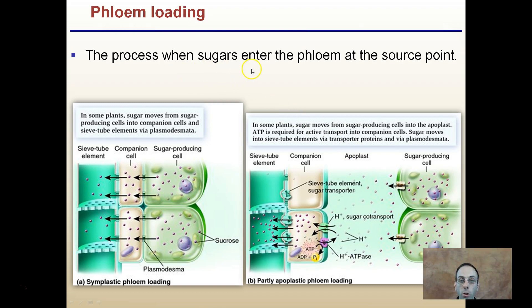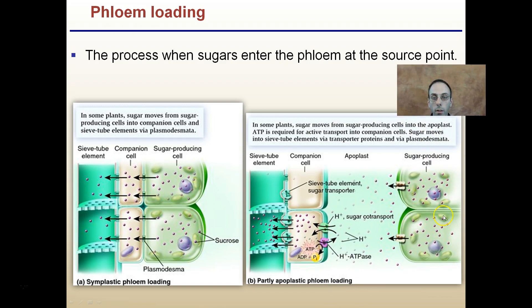Phloem loading is the process when sugars enter the phloem at a source point. In some plants, sugar moves from sugar-producing cells into companion cells and sieve tube elements via plasmodesmata — holes in the actual cell wall — and this is called symplastic phloem loading. In other plants, this is partially apoplastic phloem loading, where sugar moves from sugar-producing cells into the apoplast, and ATP is required for active transport into the companion cells, with sugar then moving into sieve tube elements via transporter proteins. Both accomplish the same end result: getting sugars into the phloem.